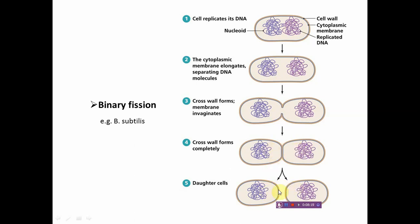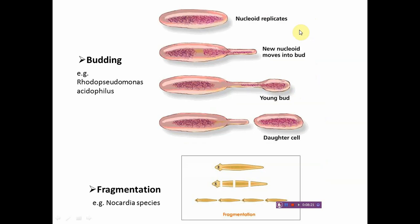In budding, cells develop an external protuberance or tubercle. The newly produced copy of DNA along with some portion of cytoplasm enters the bud, which slowly enlarges and grows into a new microorganism. Sometimes it remains attached to the original mother cell forming a pseudo-hyphae.